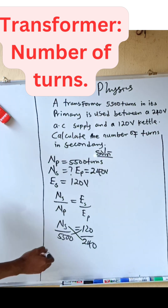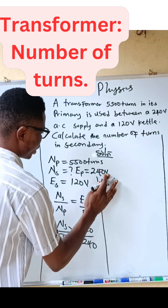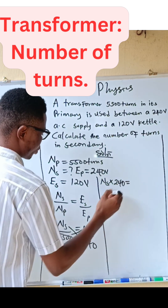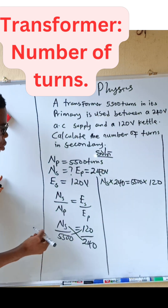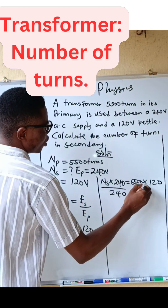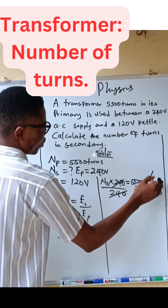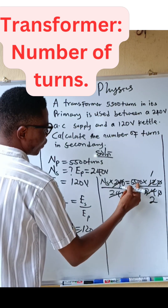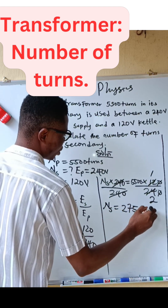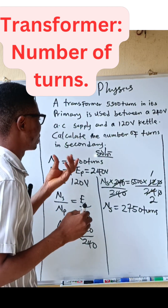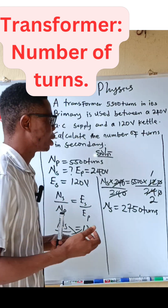Cross-multiplying, we have Ns multiplied by 240 equals five thousand five hundred times 120. Dividing both sides by 240, the 240s cancel. Five thousand five hundred divided by two gives us two thousand seven hundred and fifty turns. So the number of turns in the secondary side of the transformer is 2,750 turns, which is the answer. Bye bye.